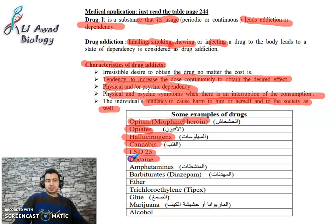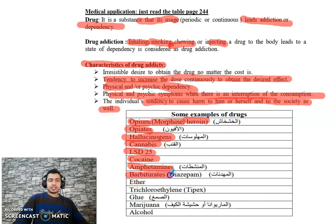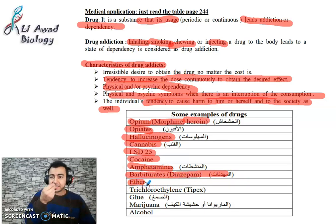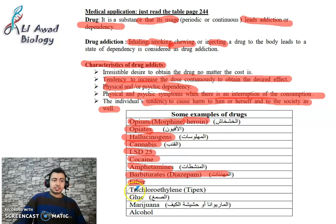Cocaine is extracted from coca leaves — as previously discussed. Amphetamines — as previously discussed. Sedatives (المهدئات). Ether is used to ripen bananas, but it is also a chemical substance that people become addicted to by sniffing it.